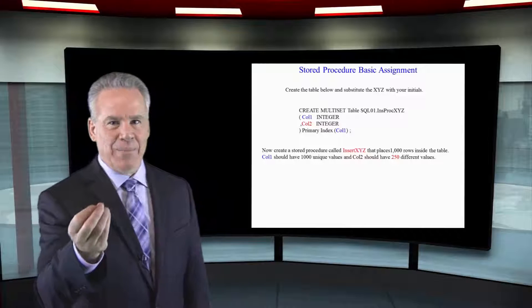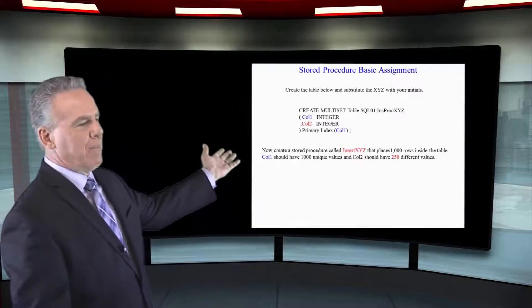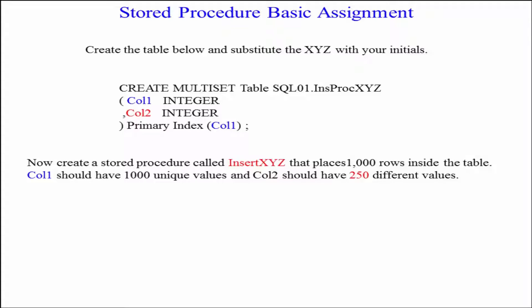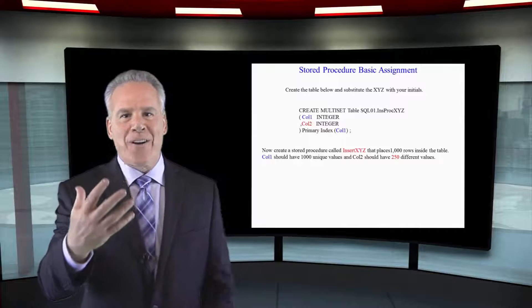First, you need to create a table. Here I've created a multi-set table so I can have duplicate rows if necessary. I'm calling it SQL01 dot which is my database and I'm calling it InsProcXYZ. Change the XYZ to your initials. It's got two columns in the table. Column one is an integer. Column two is an integer and I've given it a primary index of column one. So all I want you to really do to begin is create a table with two columns in it that are integers.